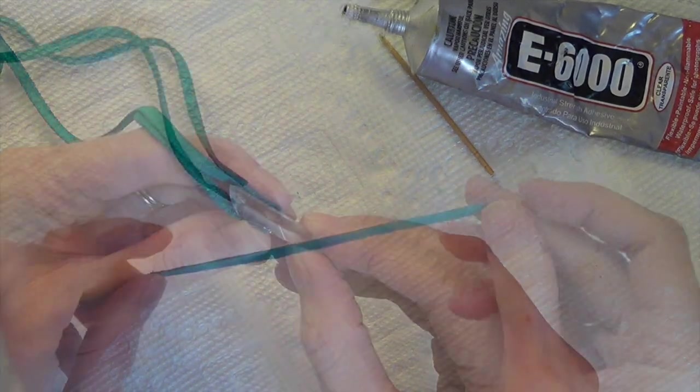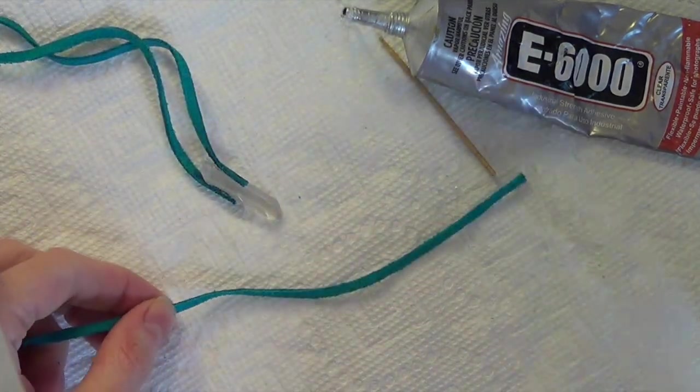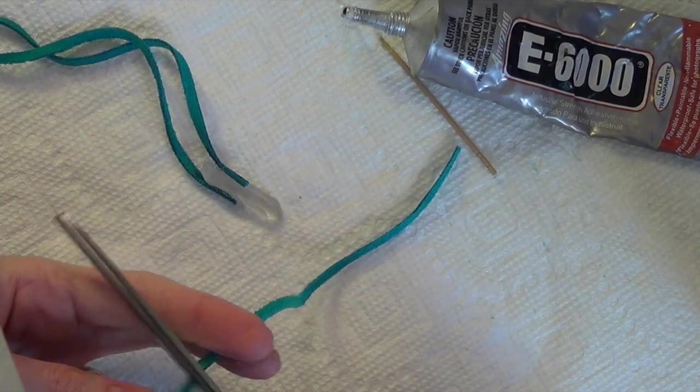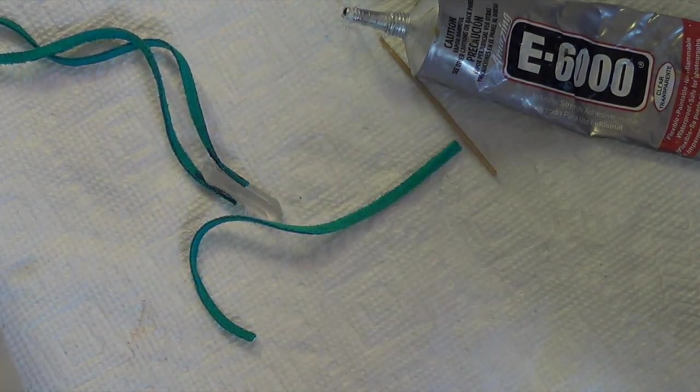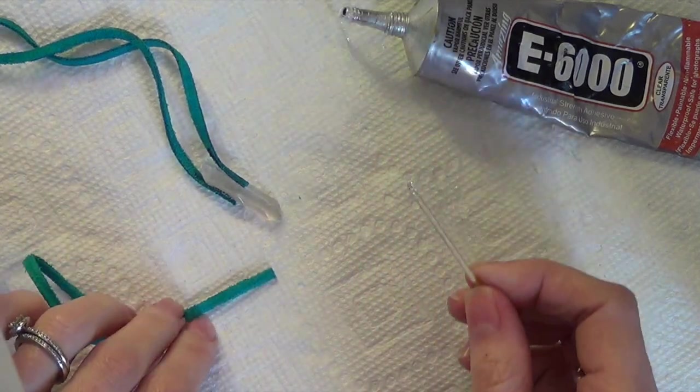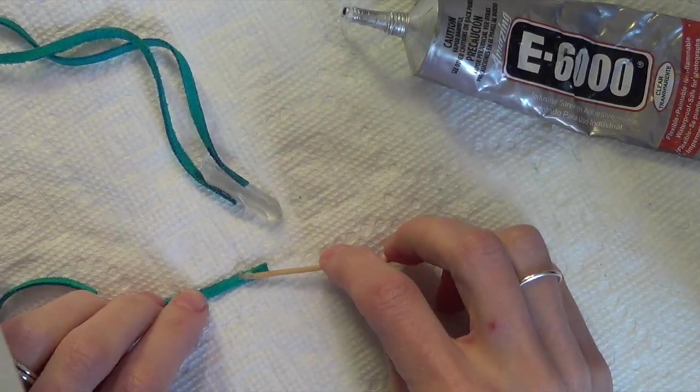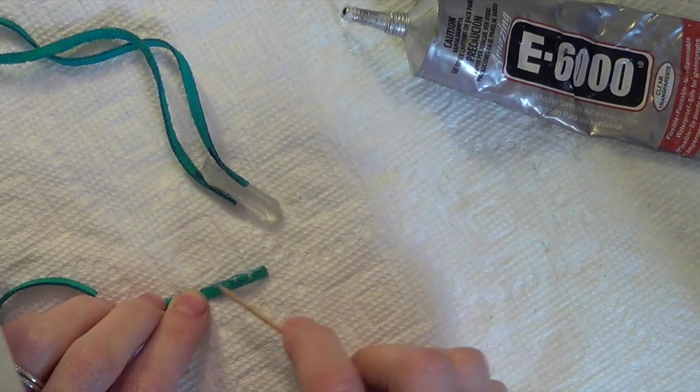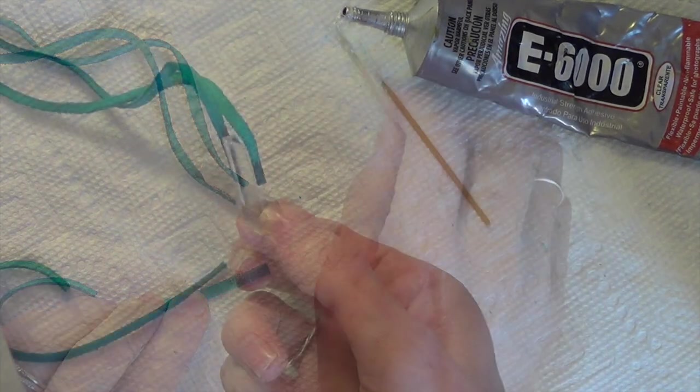You're going to do the same on the other side. Don't worry too much about that glue oozing out because it's going to help this other piece stick. Now we're going to cut a separate piece of leather that's about five to six inches long.